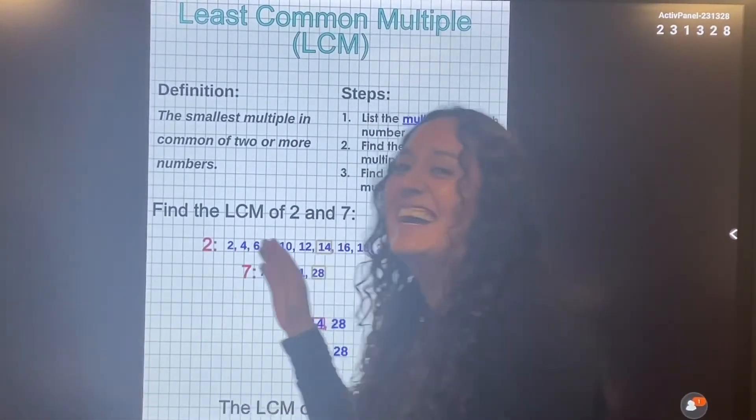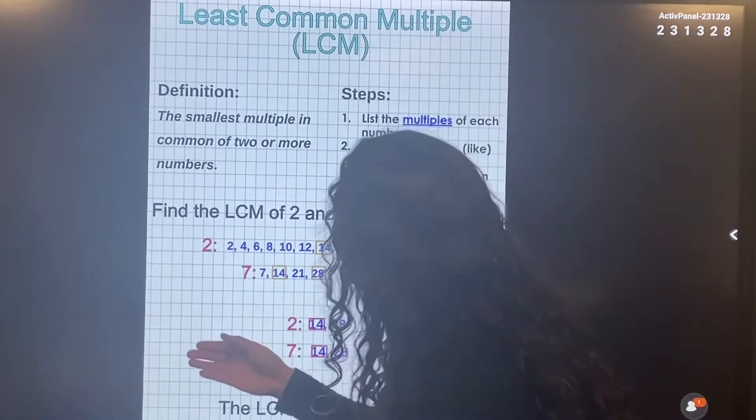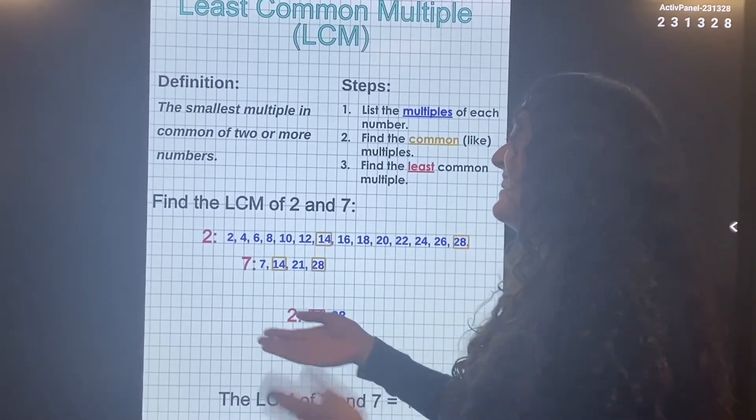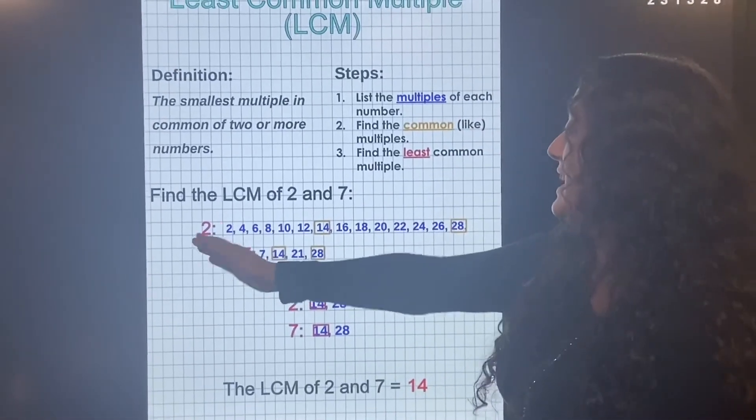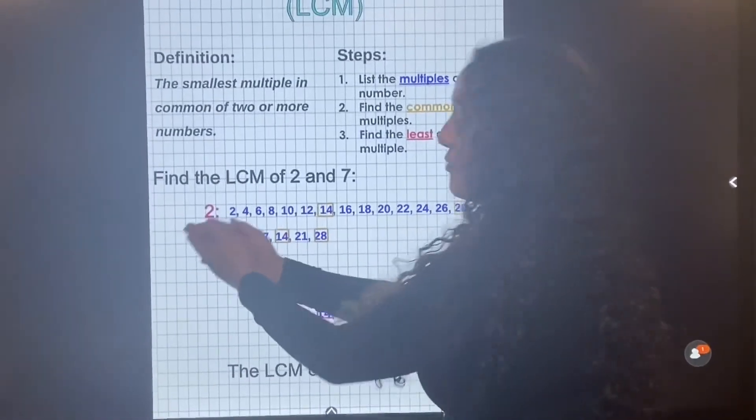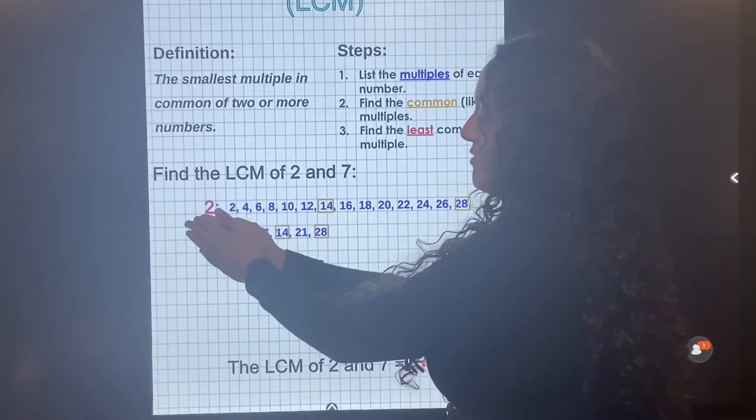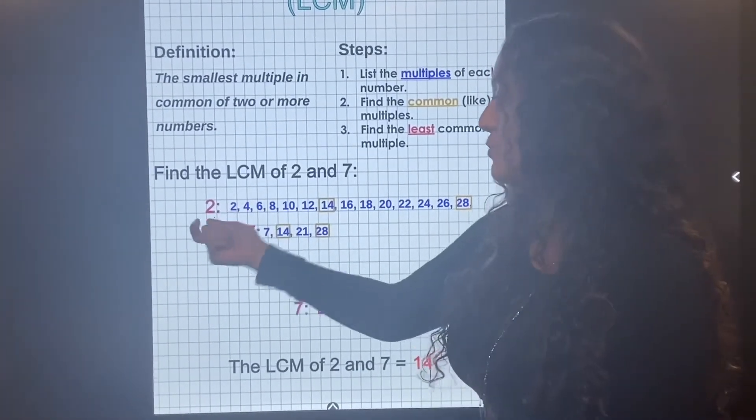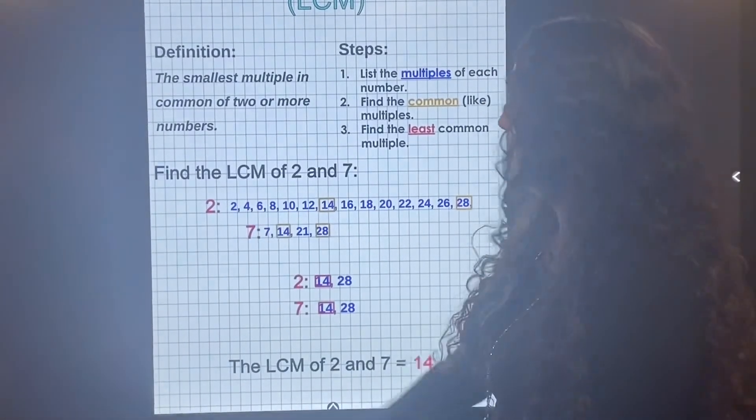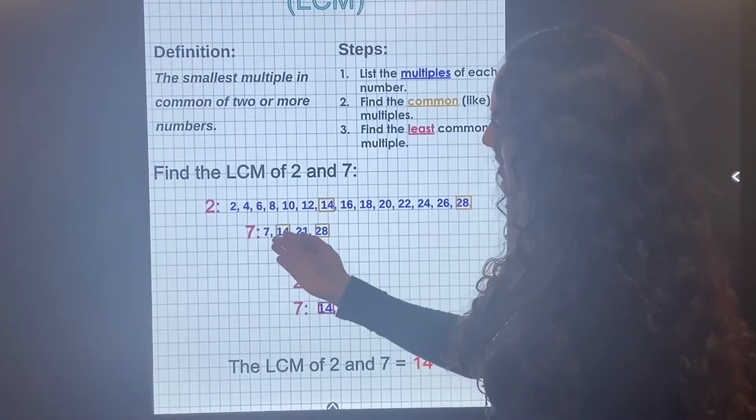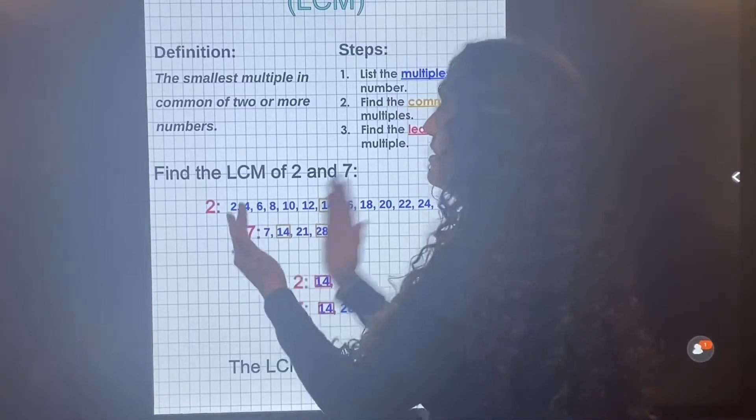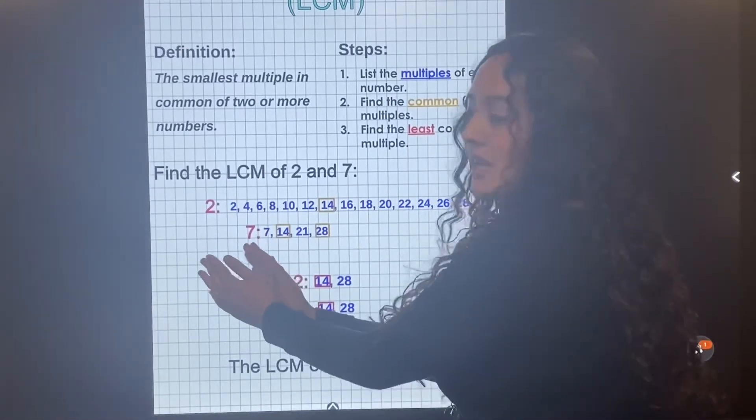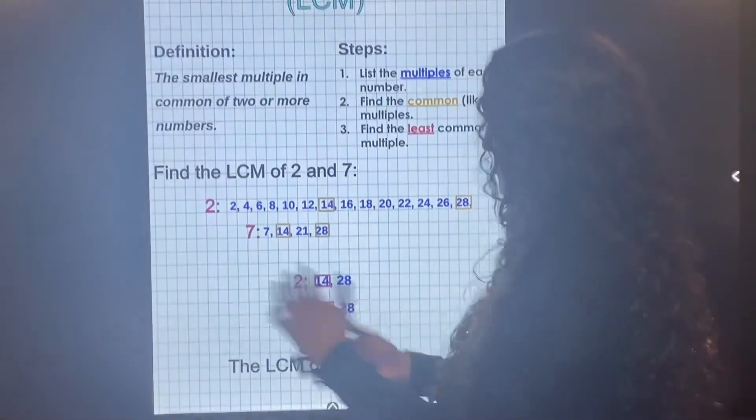So right here we can see that two is a product of two. Four is a product of two, meaning if I get two and multiply it by something, it could give me four. Same with seven. Seven is a product of seven. Fourteen is a product of seven. If I were to multiply seven times something, it will give me 14, which is like two.